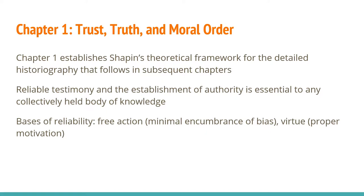Chapter one is where Shapin establishes his theoretical framework for the detailed historiography following in subsequent chapters. The takeaways here are that in order to build a body of knowledge, we need to negotiate ways of identifying reliable testimony. Normative discourses of authority are one way human societies accomplish this. In early modern England, the bases of reliability were considered to be free action — a person was more reliable if they were less encumbered by bias, in particular the bias created by being economically dependent on others — and virtue. In this particular culture, virtue is associated with Christianity and adherence to norms of civility, but we can understand it more generally as proper motivation. In our modern scientific culture, we expect scientists to be disinterested and not to pursue knowledge for their own personal gain or to use that knowledge to hurt others. This would be a more modern conception of virtue.